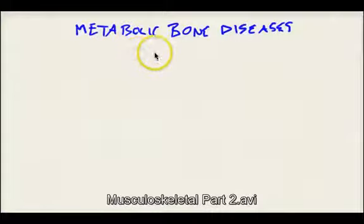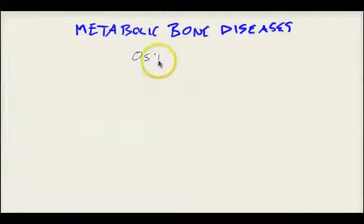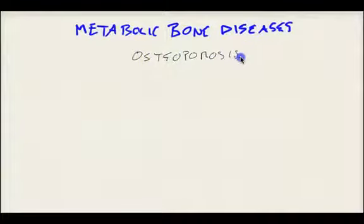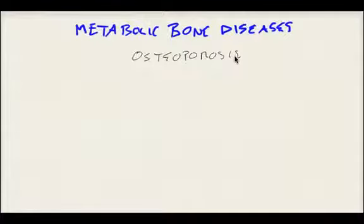Now let's talk about metabolic bone diseases. The first one we need to discuss is osteoporosis. Osteoporosis is a disease whereby bone mass or bone density is decreased, and it mainly involves the trabecular bone — that's your spongy bone. The reason why is because it's more metabolically active because there's such a much larger surface area.